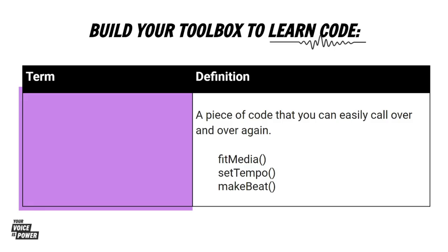Now that you've chosen your sounds for your intro, we're going to learn how to add your sounds into the intro section using a function. A function is a piece of code that you can easily call over and over again. We used this function already in lesson zero, so we're used to doing fitMedia. Set tempo and make beat are also built-in functions. Check out the spelling — that's going to be really important. Just the M in fitMedia is capital, just the T in setTempo, and just the B in makeBeat. It is case sensitive in Python, so you'll have to make your spelling very exact.